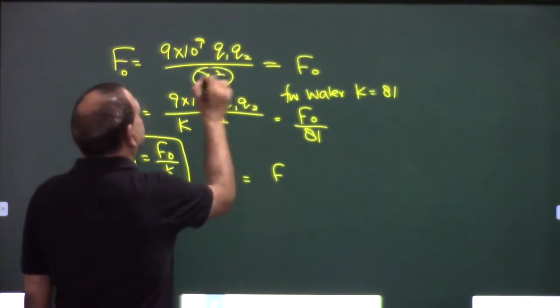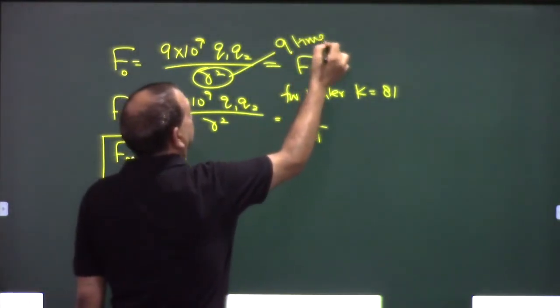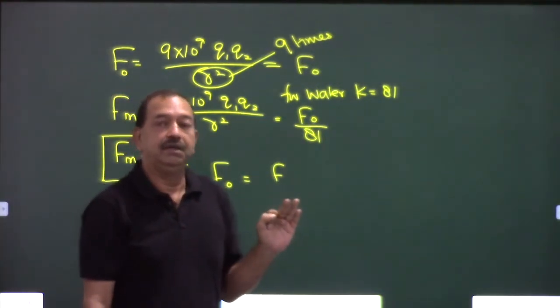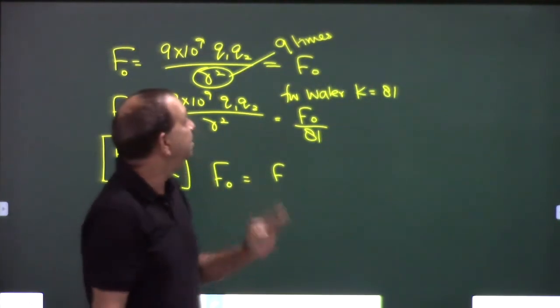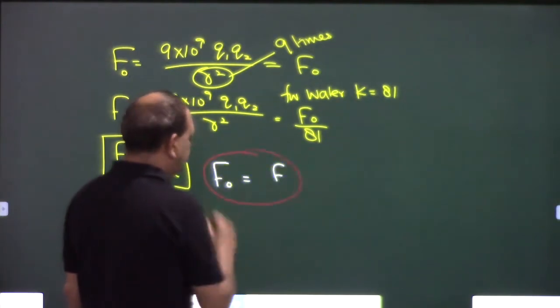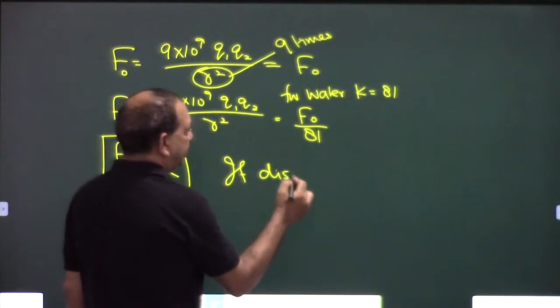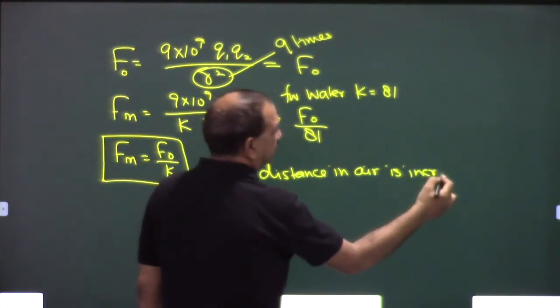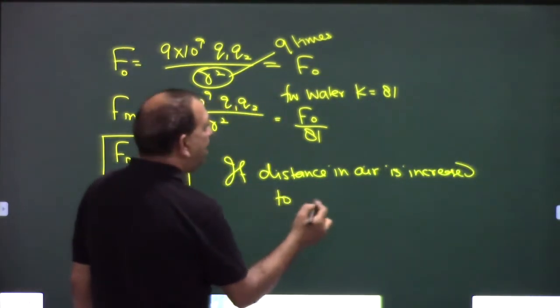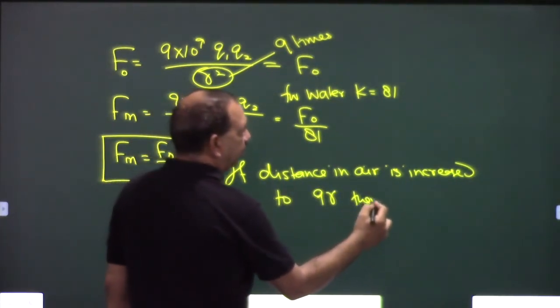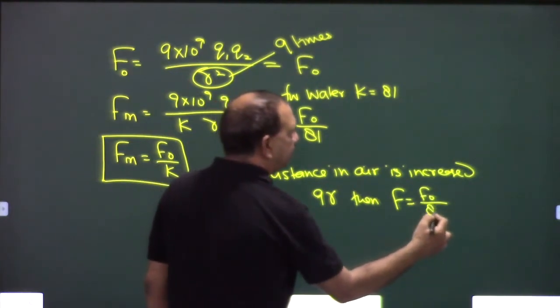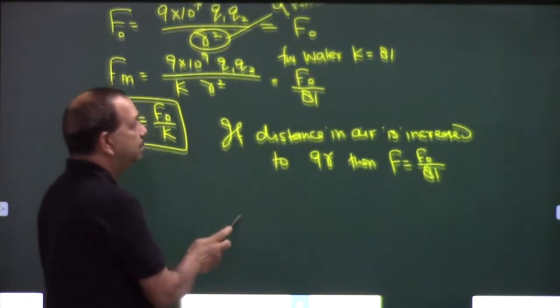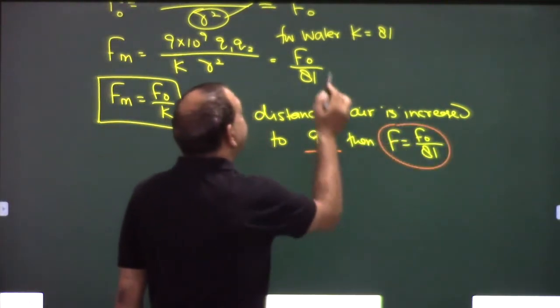Agar mein ye distance nine times kar dhu, toh force kiteni hon jai ki 1 by 81 times, right? If distance in air is increased to 9R then F will be F naught by 81 kyokhi square hota hai.